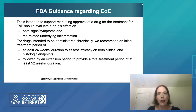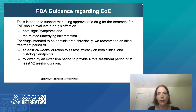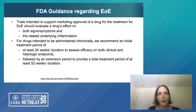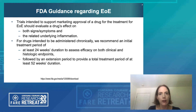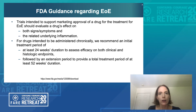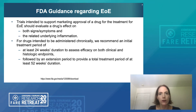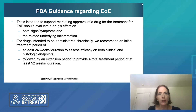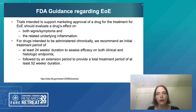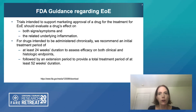Clearly, this is a disease with a high unmet medical need. Last year, the FDA released draft guidance regarding the development of drugs for the treatment of eosinophilic esophagitis. Trials should capture both improvement in histologic inflammation and improvement in signs and symptoms. It's important to have both symptomatic and objective measures showing improvement, to demonstrate durability of effect, and a total treatment period of at least 52 weeks is suggested for chronically administered medications.